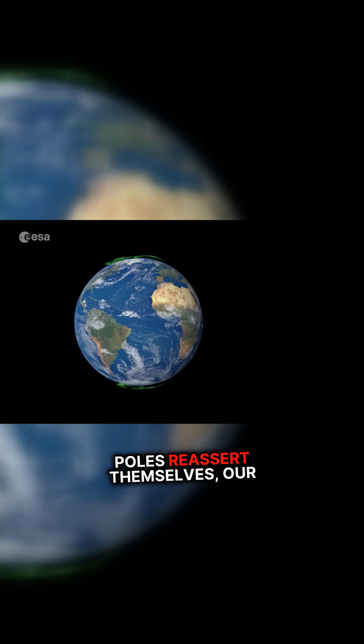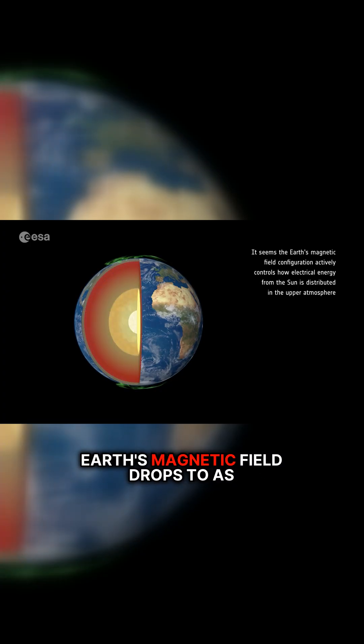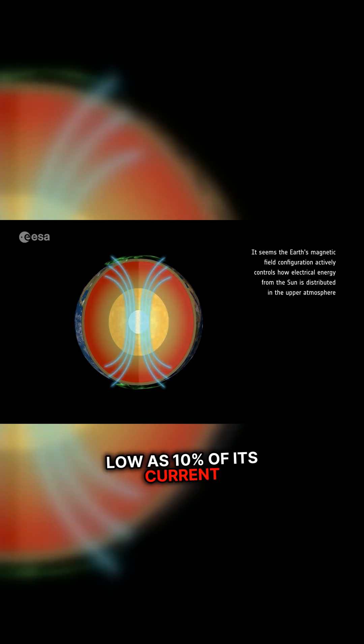During that period before the poles reassert themselves, our Earth's magnetic field drops to as low as 10% of its current strength.